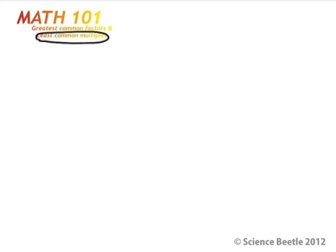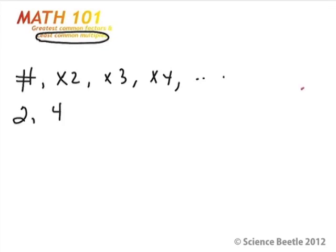When we talk about least common multiples, what we're really referring to is when you have a certain number and you can multiply it — that number is going to be times 2, times 3, times 4, so on and so forth. An example of this is if you take 2. A multiple of 2 is going to be 4, because we take the number and multiply it times 2 to get 4.